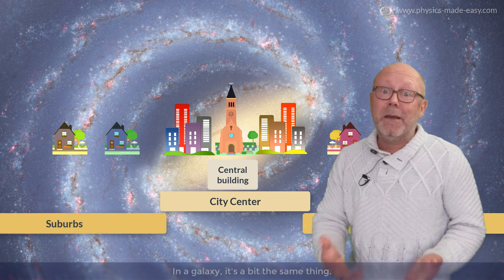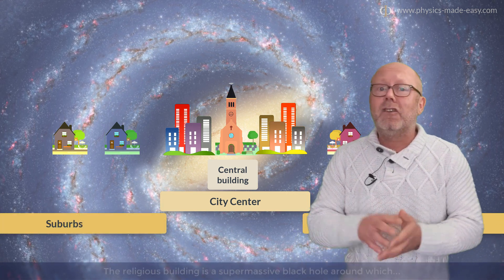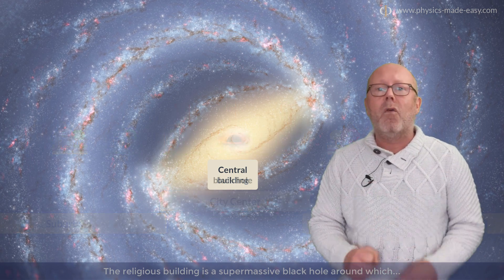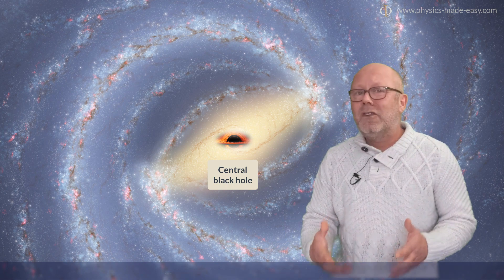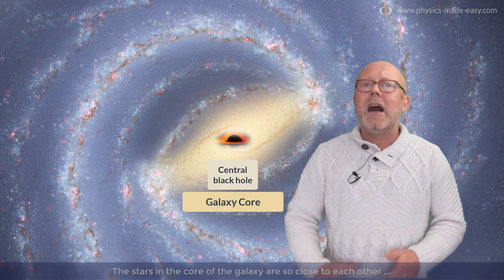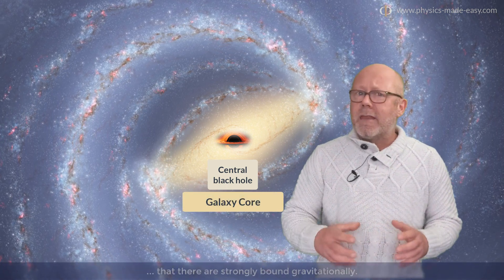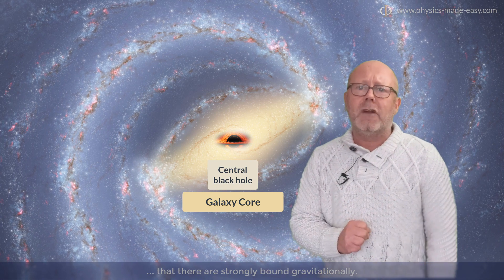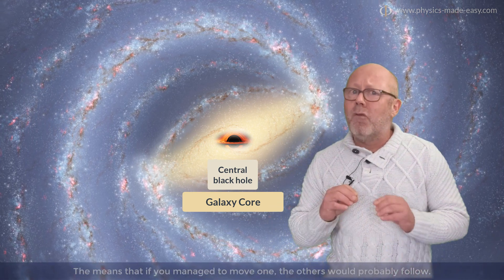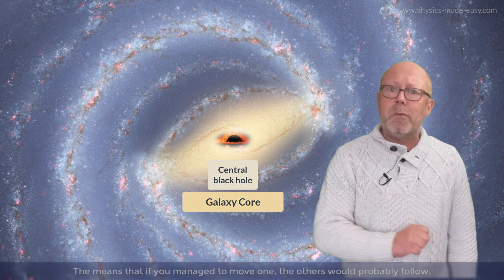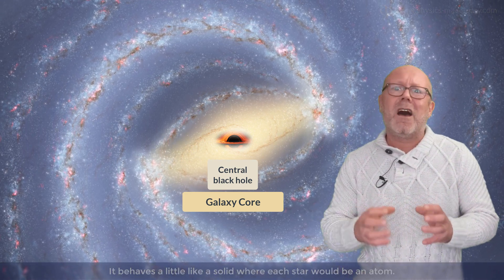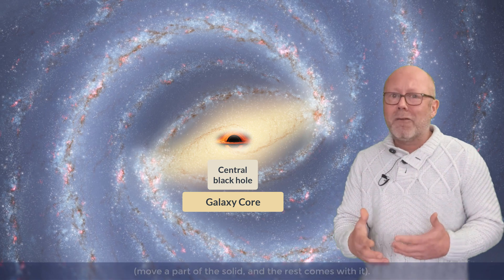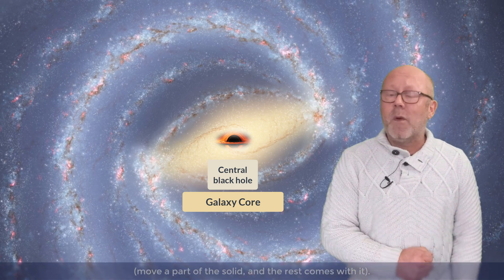In a galaxy, it's a bit the same thing. The religious building is a supermassive black hole around which all the stars of the galaxy are in orbit. The stars in the core of the galaxy are so close to each other that they are strongly bound gravitationally. That means that if you manage to move one, the others would probably follow. Yeah, it behaves a little like a solid, where each star would be an atom. Move a part of the solid, and the rest comes with it.